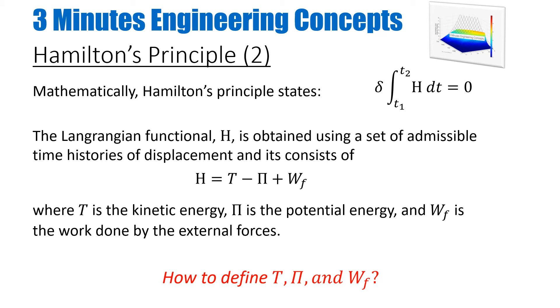My Lagrangian function will be of this kind of form as shown in the slide here: it is the kinetic energy minus the potential energy plus the work. It's based on the dynamic equilibrium of the system, where T is kinetic energy, π is the potential energy, and W_F is the work done by the external forces. Now the question is, I know my H function, another integral equation on the top—how to define kinetic energy, potential energy or elastic strain energy, and the work done by the forces? That's what we're gonna do now.